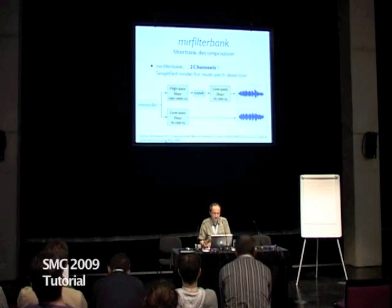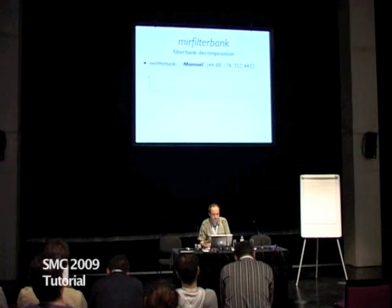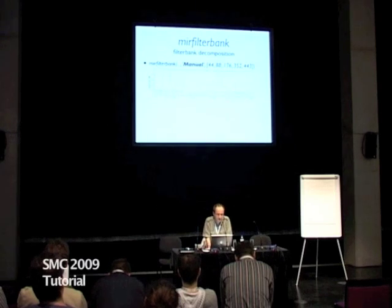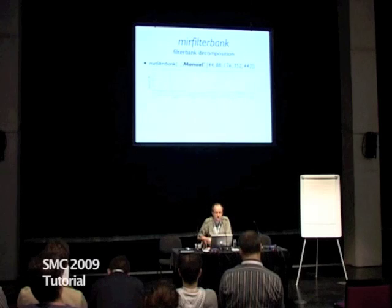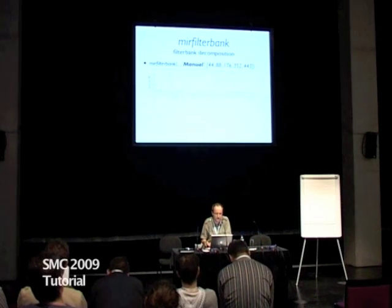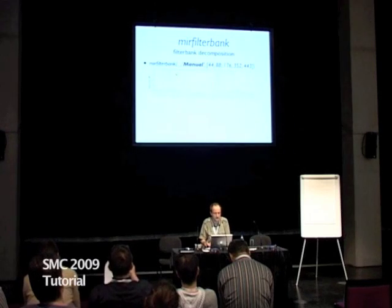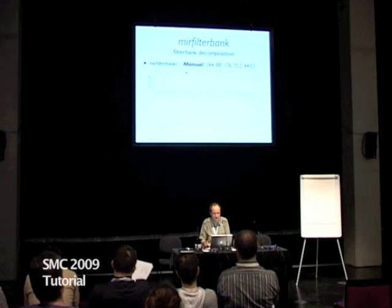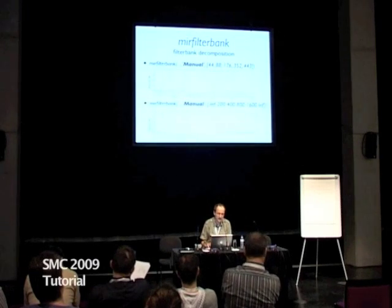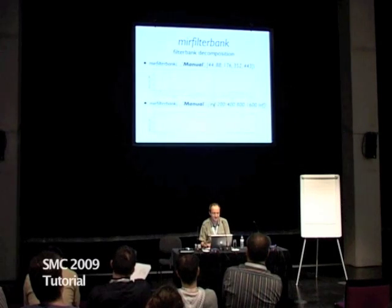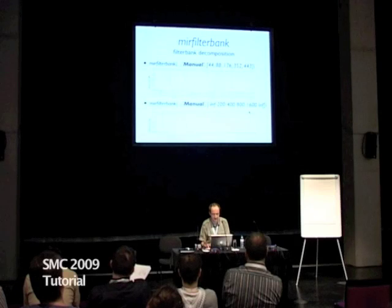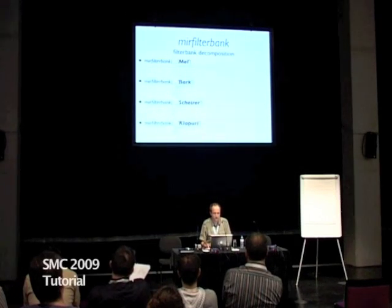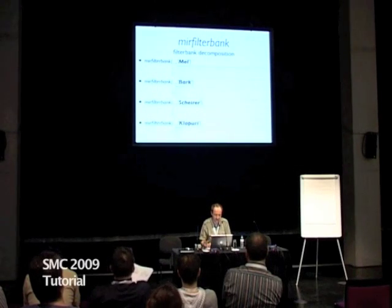Another example used for pitch extraction is just two channels — low pass and high register. You can also propose a manual filter bank decomposition where you specify the frequency borders. For instance, you can have one channel from 44 to 80 Hz, then another from 88 to 176 Hz, and so on. Adding minus infinity means the first one is a low-pass filter, and adding infinity means the last one is a high-pass filter. There are examples already available based on Mel, Bark, Sone, and Klapuri.